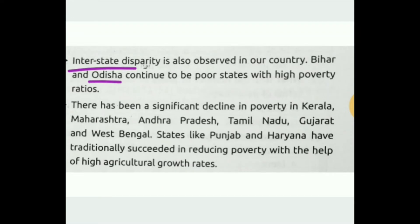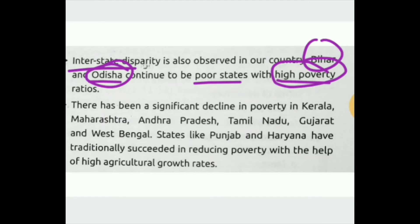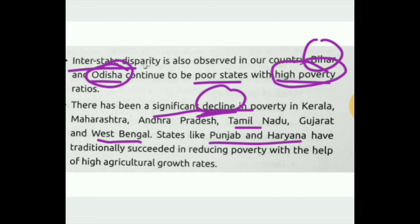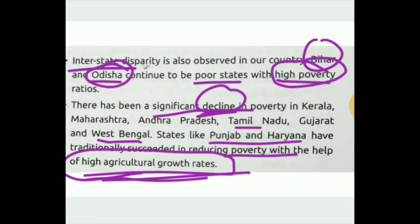Bihar and Orissa continue to be the poorest states with a high poverty ratio and high concentration of poor people. However, states like Kerala, Maharashtra, Andhra Pradesh, Tamil Nadu, Gujarat, West Bengal, Punjab, and Haryana have traditionally succeeded in reducing poverty, aided by a high agriculture growth rate.